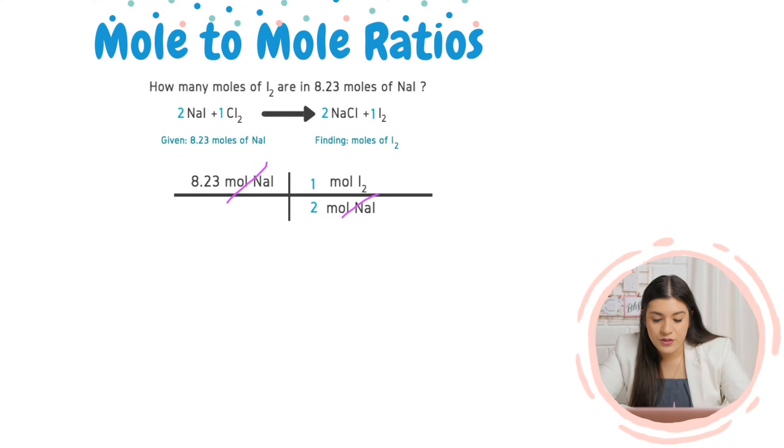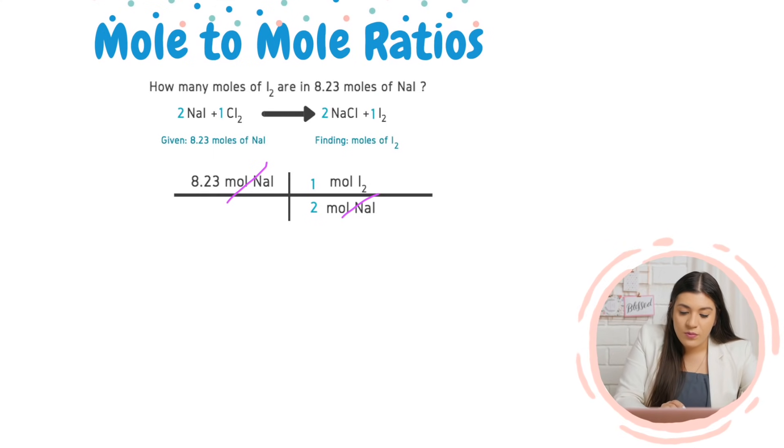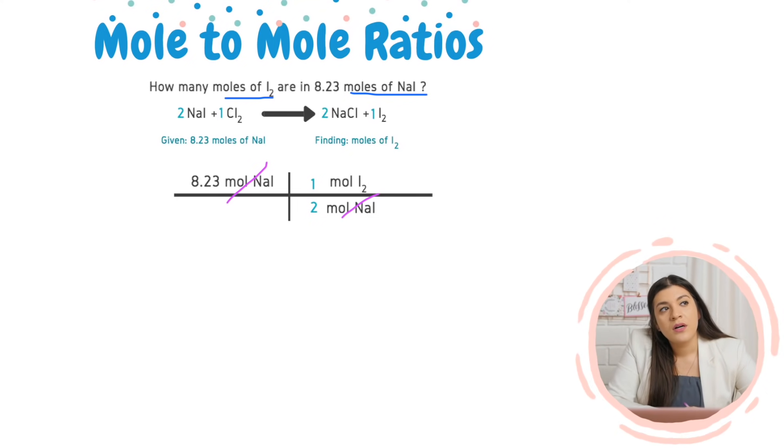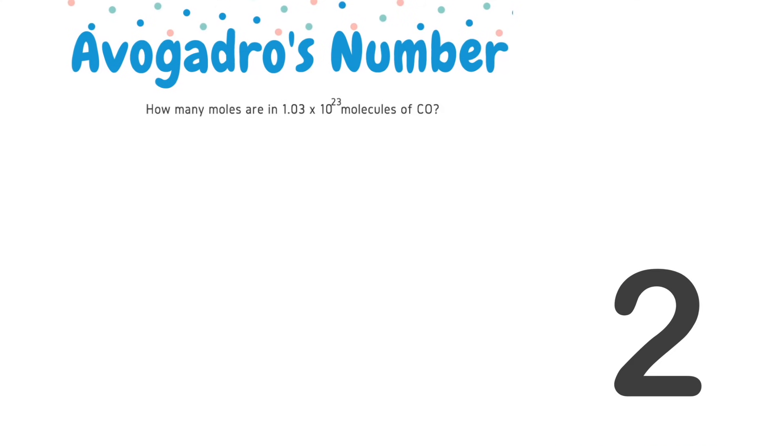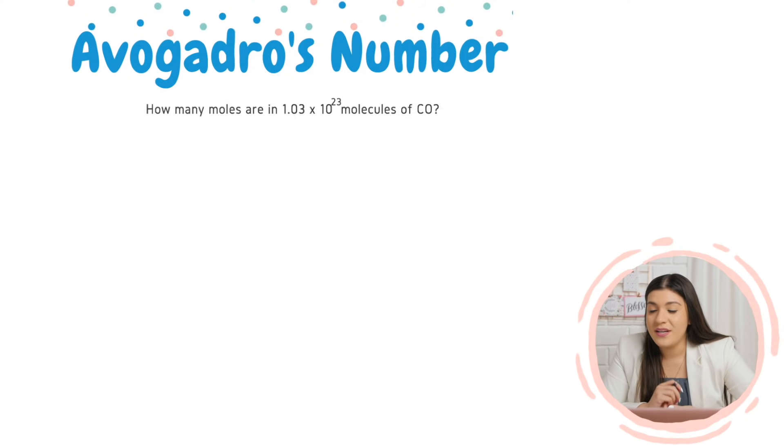So these two cancel, right? Not all stoichiometry questions are going to take like two conversion factors or even three conversion factors. Some might even just take one. And how you know that, by the way, is this is just going from moles to moles, right? It's not going from grams to grams, or it's not going from grams to molecules. This hint is kind of like already telling you to use a mole to mole ratio, since you already have the two units of moles are the same. It's just the compound that needs to be changed.